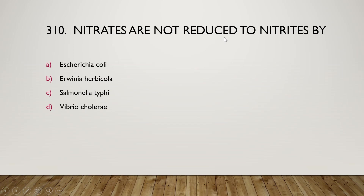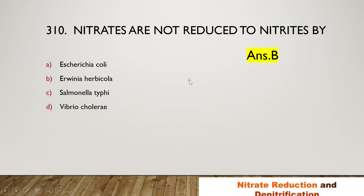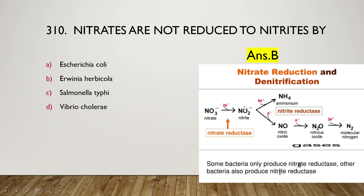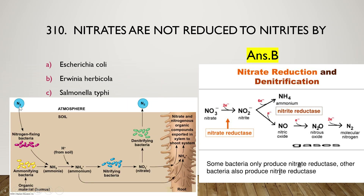Nitrates are not reduced to nitrites by: Escherichia coli, Erwinia herbicola, Salmonella typhi, or Vibrio cholerae. The right answer is option B — Erwinia herbicola. Nitrate reduction means nitrite production by nitrate reductase. This nitrite can ultimately be converted into molecular nitrogen and released to the atmosphere, a process known as denitrification.